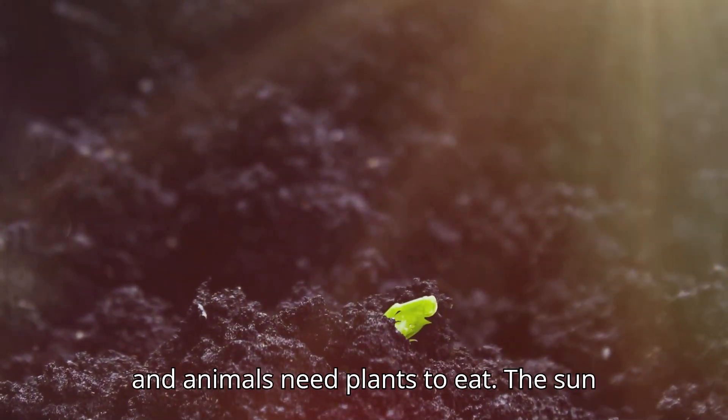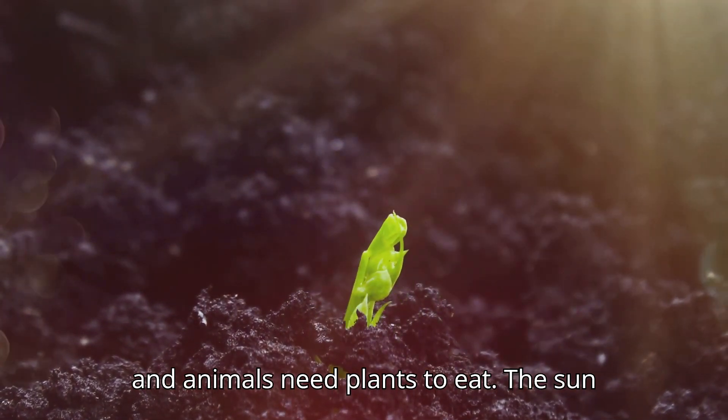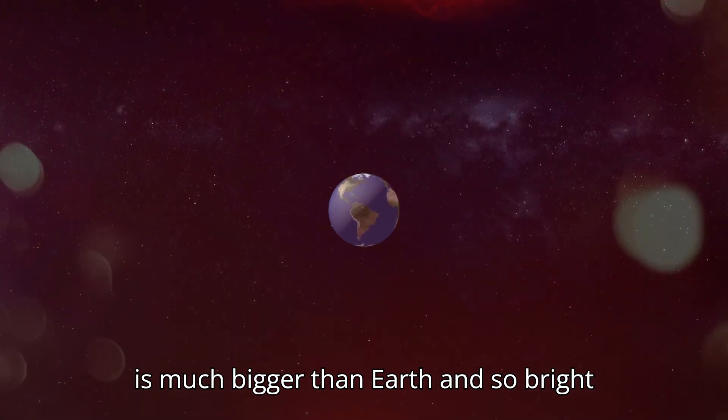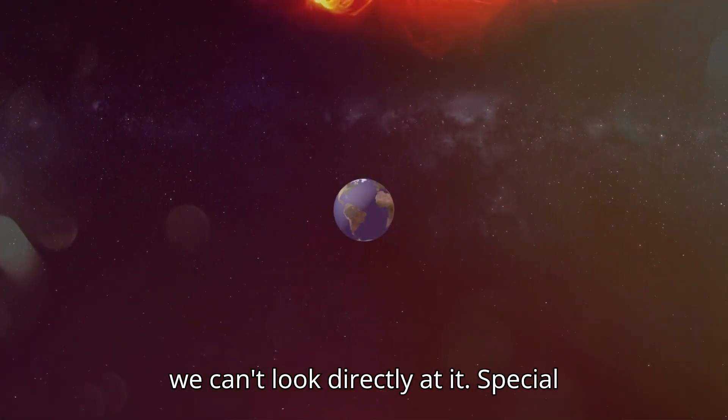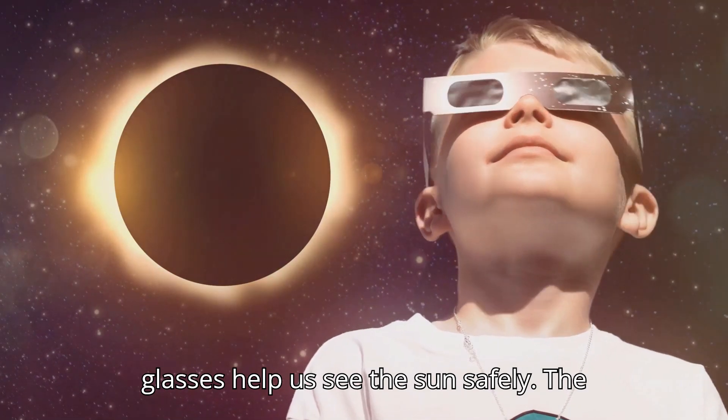Plants use sunlight to grow, and animals need plants to eat. The sun is much bigger than Earth and so bright we can't look directly at it. Special glasses help us see the sun safely.